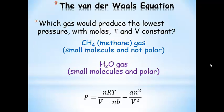Let's compare two other gases that are roughly the same molecular weight: which would produce the lowest pressure, assuming moles of gas, temperature, and volume are all constant? The first is methane, CH₄ — a small molecule that isn't polar. The second is water vapor — also small molecules, but they are polar. Predict the sizes of A and B and then predict which would produce the lowest pressure.